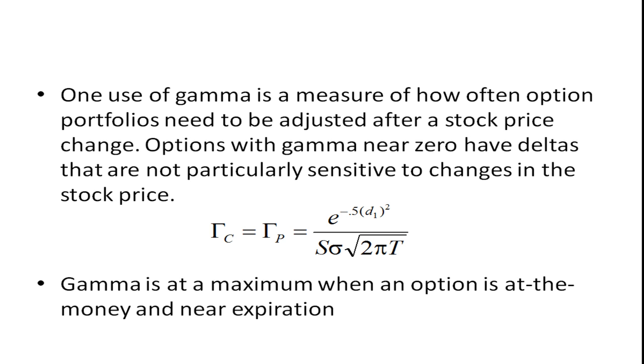Now, one use of gamma is a measure of how often option portfolios need to be adjusted after a stock price change. Options with a gamma near zero have deltas that are not particularly sensitive to changes in the stock price. And if you think about it, gamma is going to be at a maximum when an option is at the money or near the money. If it's way out of the money or way in the money, a change in the price of the stock isn't going to have really any impact on the portfolio. But if it's at or near the money, then a small change in the stock price may necessitate adjusting the portfolio.